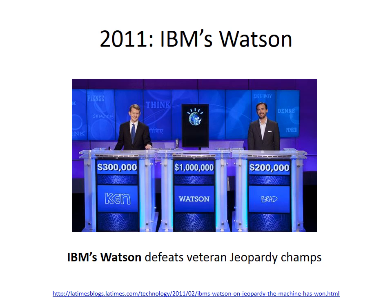IBM made headlines again in 2011 when their Watson system defeated veteran Jeopardy! champions. This was a huge feat in AI because it involved answering questions posed in natural language — a task that has been very difficult for computer systems. Watson used 200 million pages of information as well as the full text of Wikipedia to answer the Jeopardy! questions, but it did not use the internet during the game. This achievement highlights just how much progress AI researchers have made in the past few decades.